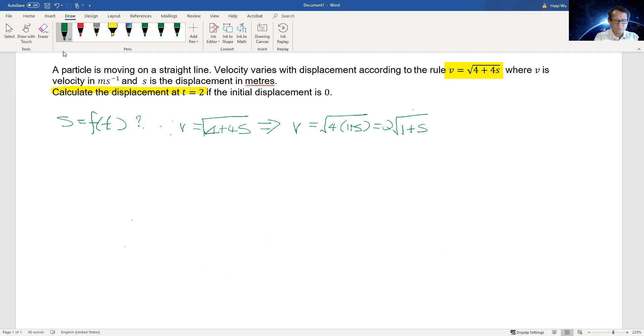We need to change this particular relationship v against s into a relationship between t and s. Let's change this velocity into differentiate displacement with respect to time: ds/dt. So ds/dt = 2√(1 + s). We can change this into ds = 2√(1 + s) dt.